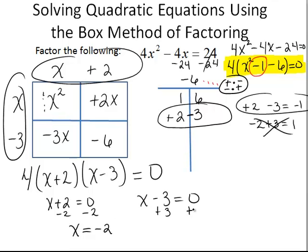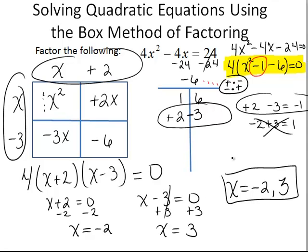Add 3 to the other side. x must be equal to 3. So our possible answers here are x equals negative 2 or 3. We have solved the quadratic equation 4x squared minus 4x equals 24 using the box method of factoring.